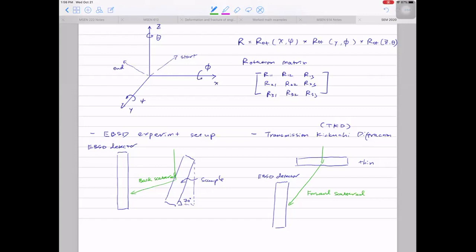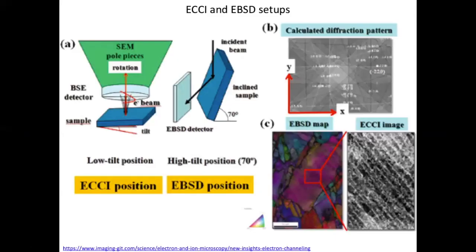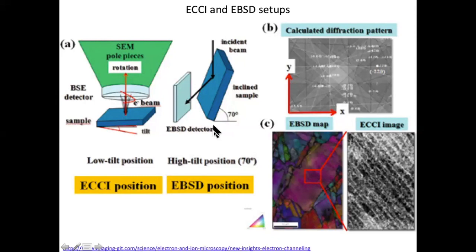This lecture covered two topics: ECCI (electron channeling contrast imaging) and EBSD (electron backscatter diffraction). For EBSD, the setup involves a 70-degree tilt and capturing backscattered electron diffraction on the detector. For ECCI, it's similar to regular SEM imaging — the sample lies flat with a very good surface, the stage is raised to bring the sample close to the detector.